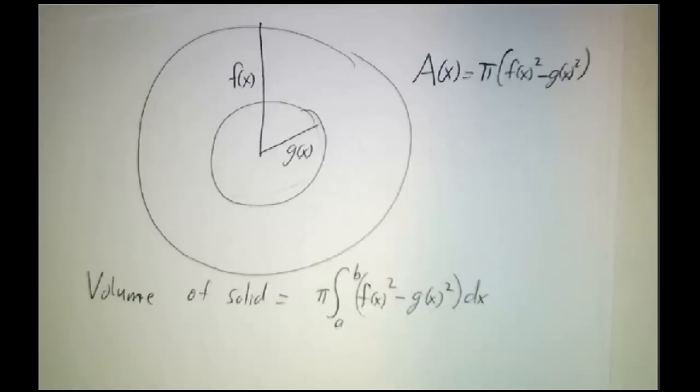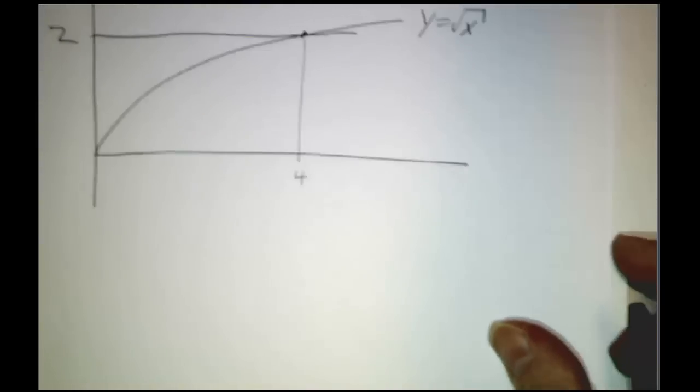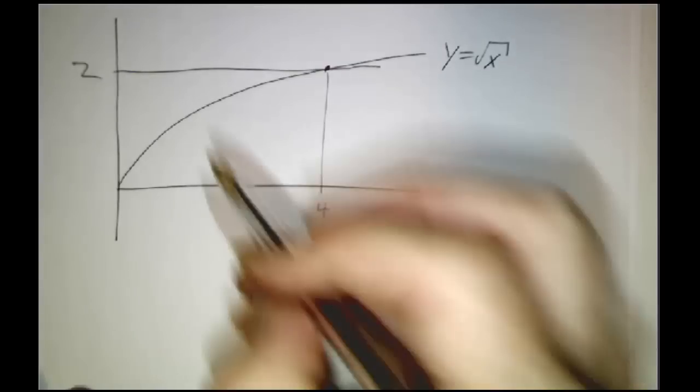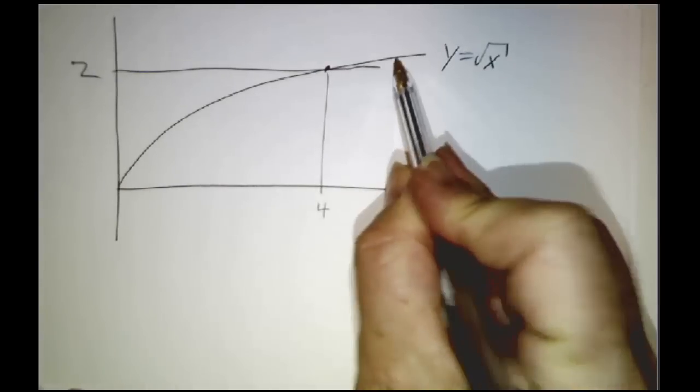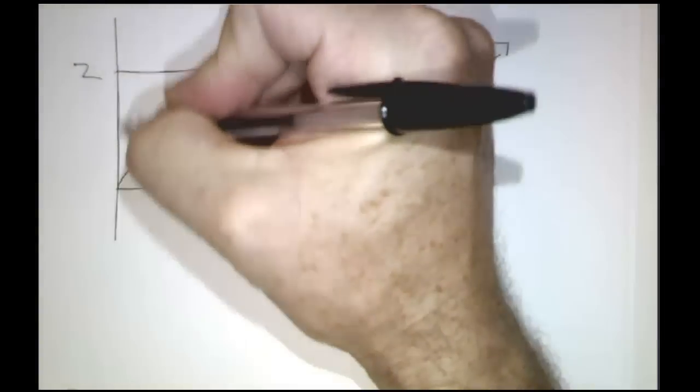So for example, let's look at a region that we studied back when we were talking about areas. We want the region between the curve y equals square root of x and the line y equals 2 and the y-axis.